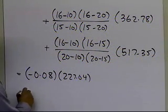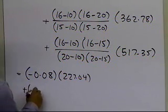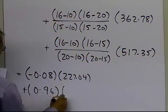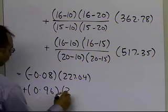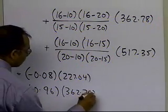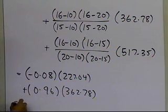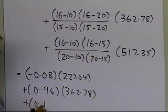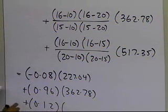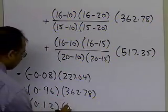Plus 0.96 times 362.78, so that's the amount of weightage which is given to the velocity at t1, plus 0.12 times the velocity at t2, which is 517.35.